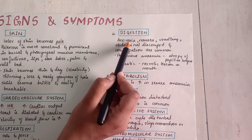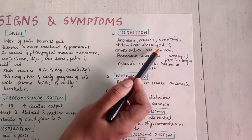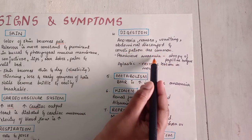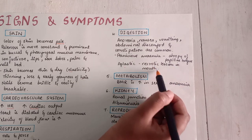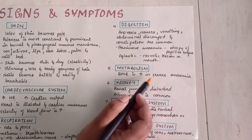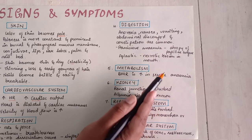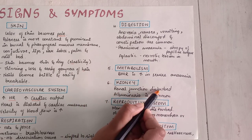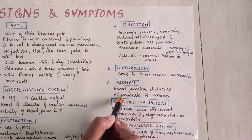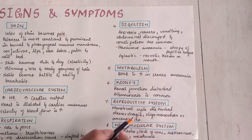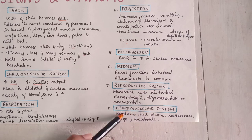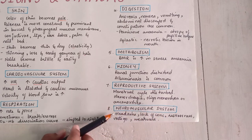In digestion: anorexia, nausea, vomiting, abdominal discomfort, and constipation are common symptoms. In pernicious anemia, atrophy of the papillae of the tongue is seen; in aplastic anemia, necrotic lesions in the mouth appear. Basal metabolic rate is increased in severe anemia, leading to weight loss. In the kidney, adrenal functions are disturbed and albuminuria is common. In the reproductive system, menstrual cycle is disturbed — menorrhagia, oligomenorrhea, and amenorrhea can occur. In the neuromuscular system, headache, lack of concentration, restlessness, vertigo, and weakness are seen.